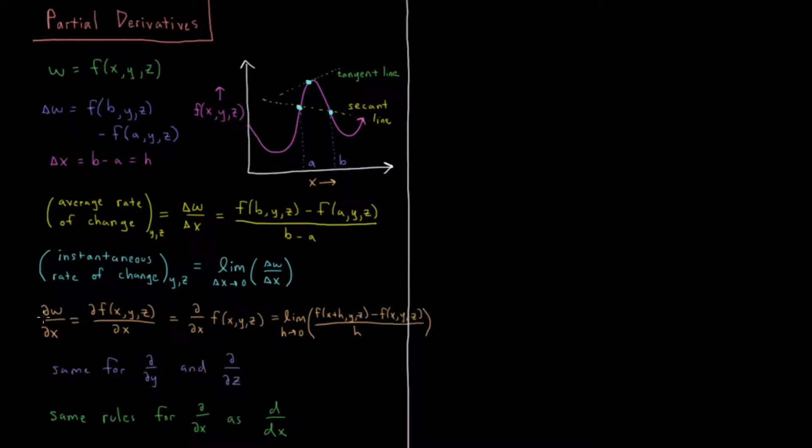So we can define what is called a partial derivative here. So that gives us this sign with this kind of squiggly d instead of the standard Roman alphabet d. So I have ∂w/∂x is equal to ∂f(x,y,z)/∂x, the partial derivative with respect to x. The ∂/∂x is the partial derivative operator for x. That's equal to the limit as h goes to zero for f(x+h, y, z) minus f(x, y, z) over h. It's the instantaneous rate of change just by changing the x variable and leaving y and z unchanged.